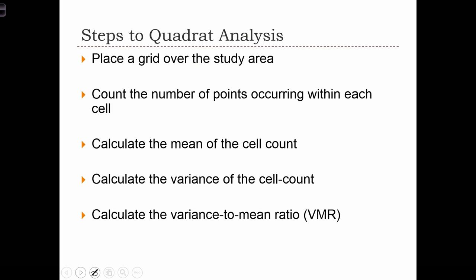So in quadrat analysis, the first step is to place the grid over the study area. Next, we count the number of points occurring within each quadrat. Then we're going to calculate the mean of the cell count. So we are going to take N, which is the number of points, divided by M, which is the number of quadrats. And that's going to give us the mean cell count.